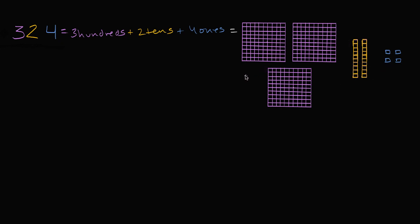So now let's get some practice subtracting from 324. The first thing I want to subtract is a ten. Ten is one ten and zero ones. I'm going to do that in the blue color. Zero ones — so I'm not subtracting any hundreds, I am subtracting one ten — you see it right over there — minus one ten, and I'm not subtracting any ones.